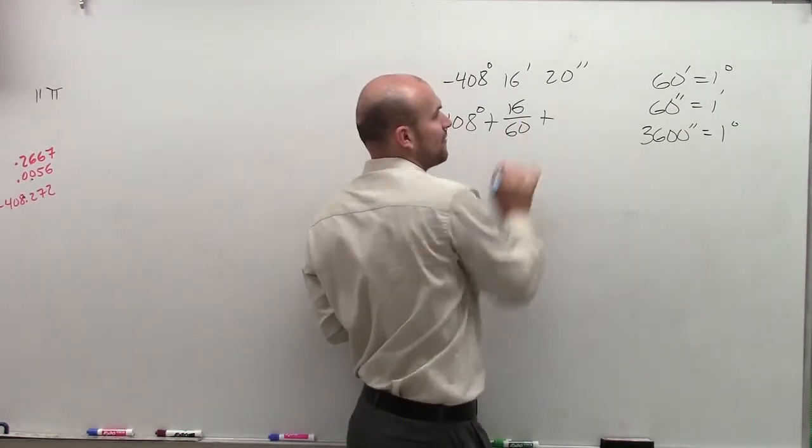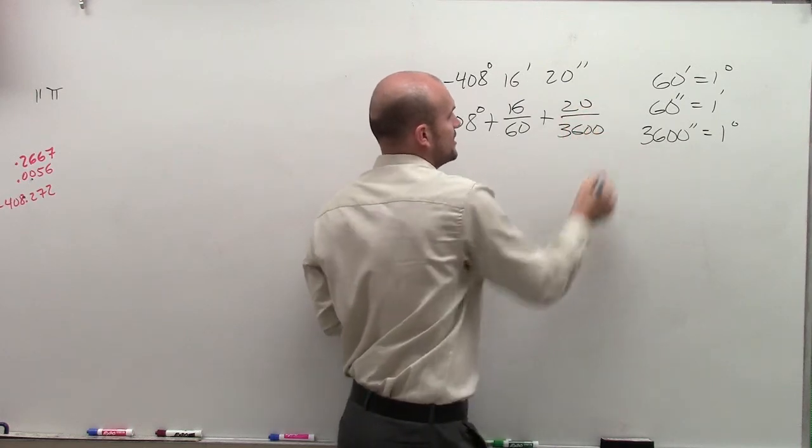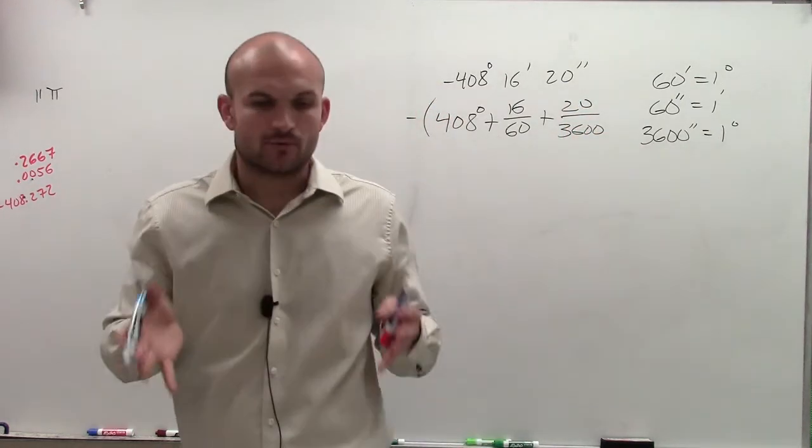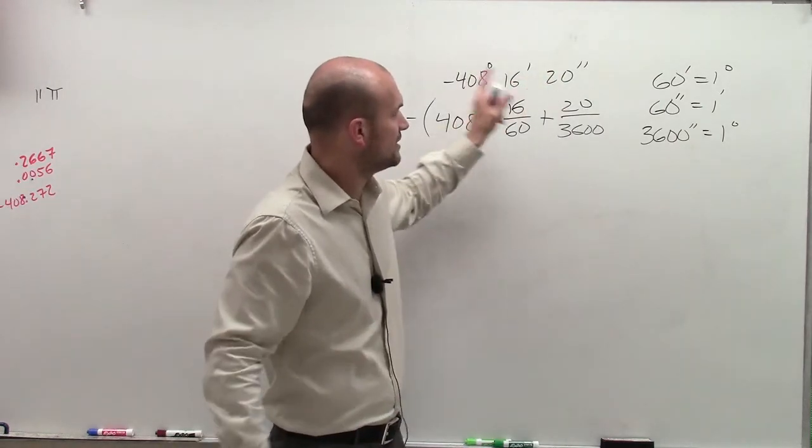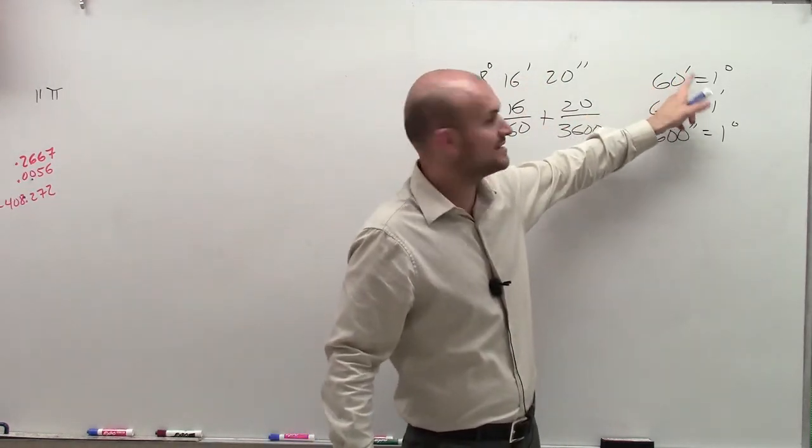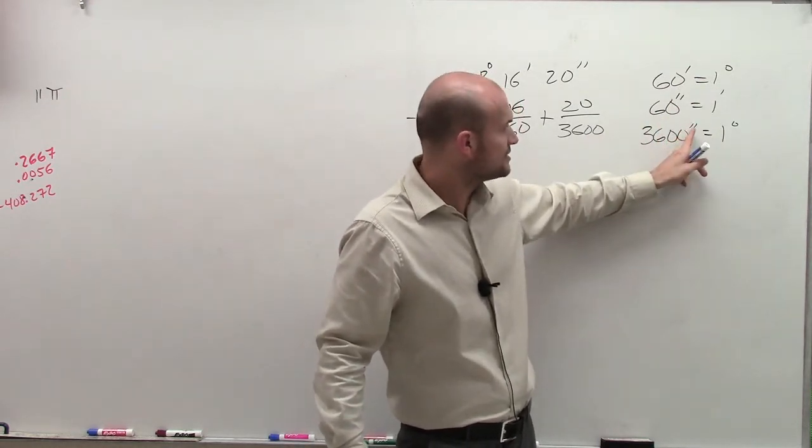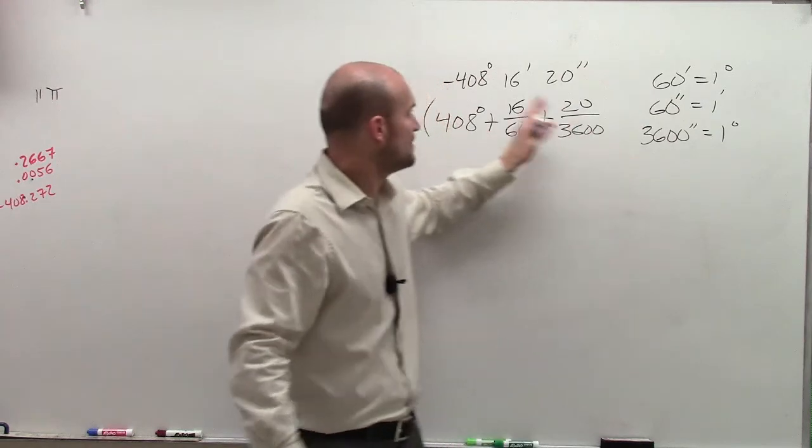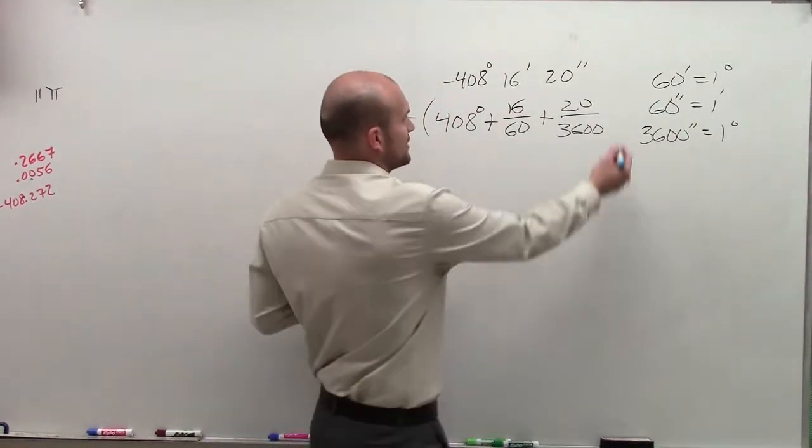Same thing—I need to add the fraction of my seconds, which would be 20 over 3,600. You need to remember that when converting, these are parts of a degree. It takes 60 minutes to make a degree and 3,600 seconds to make a degree. If I'm given certain parts, I'm going to put it over the whole that it takes to make a degree.